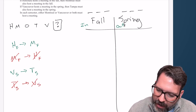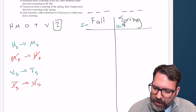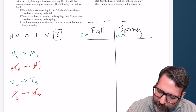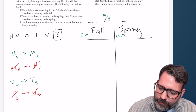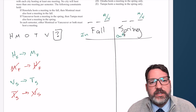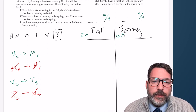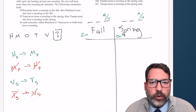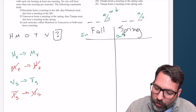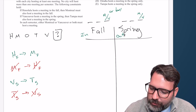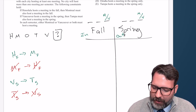Finally, in each semester, either M or V or both must host a meeting. I think the best way to handle this is with a simple placeholder: in the fall, one slot has to be taken by M or V; in the spring, one slot has to be taken by M or V. As is typically the case with in-and-out games, this does not mean only one of M or V — it could be M or V or both.